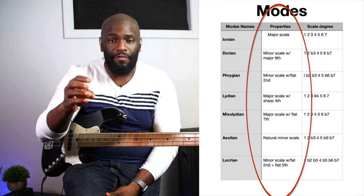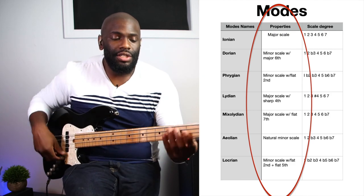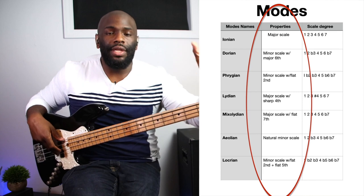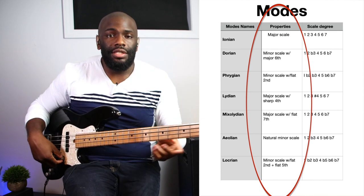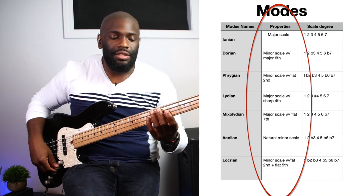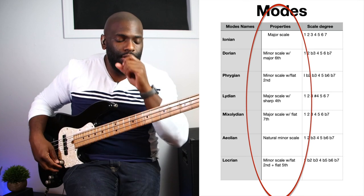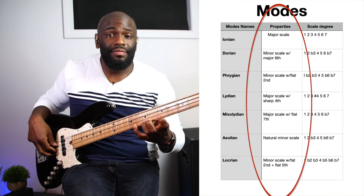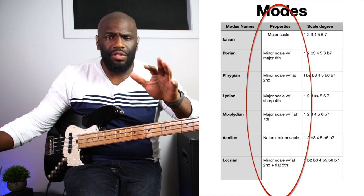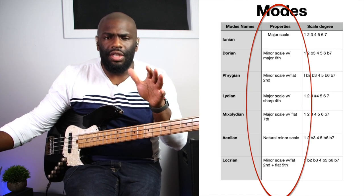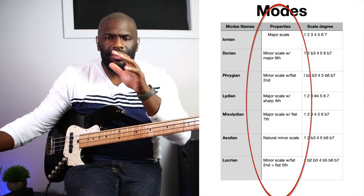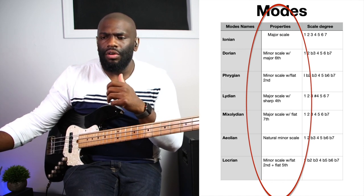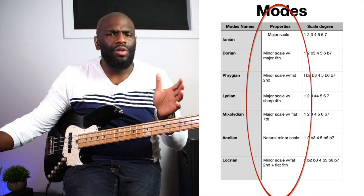So Ionian — you'll notice I didn't write anything special inside of Ionian because it's just the major scale. We all should know that: 1, 2, 3, 4, 5, 6, 7 — that scale degree, just major. Wherever you play this, it doesn't have to start on C, doesn't have to start on D. It doesn't matter where you are. I can start on E flat.